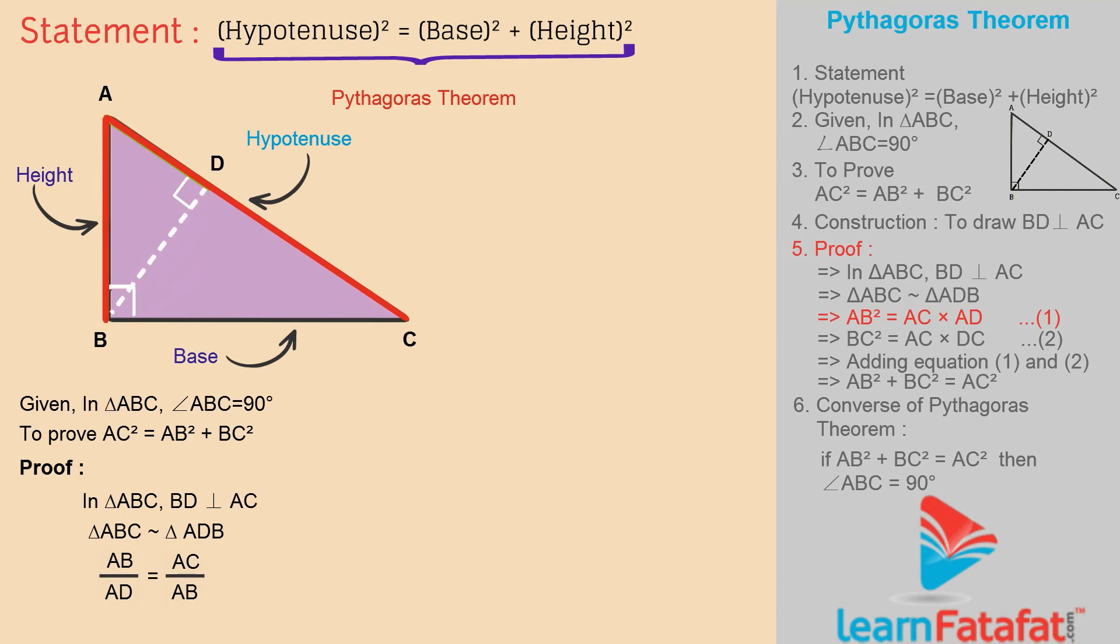AB divided by AD equals AC divided by AB by CSST. Therefore, AB² equals AC times AD. This is equation 1.